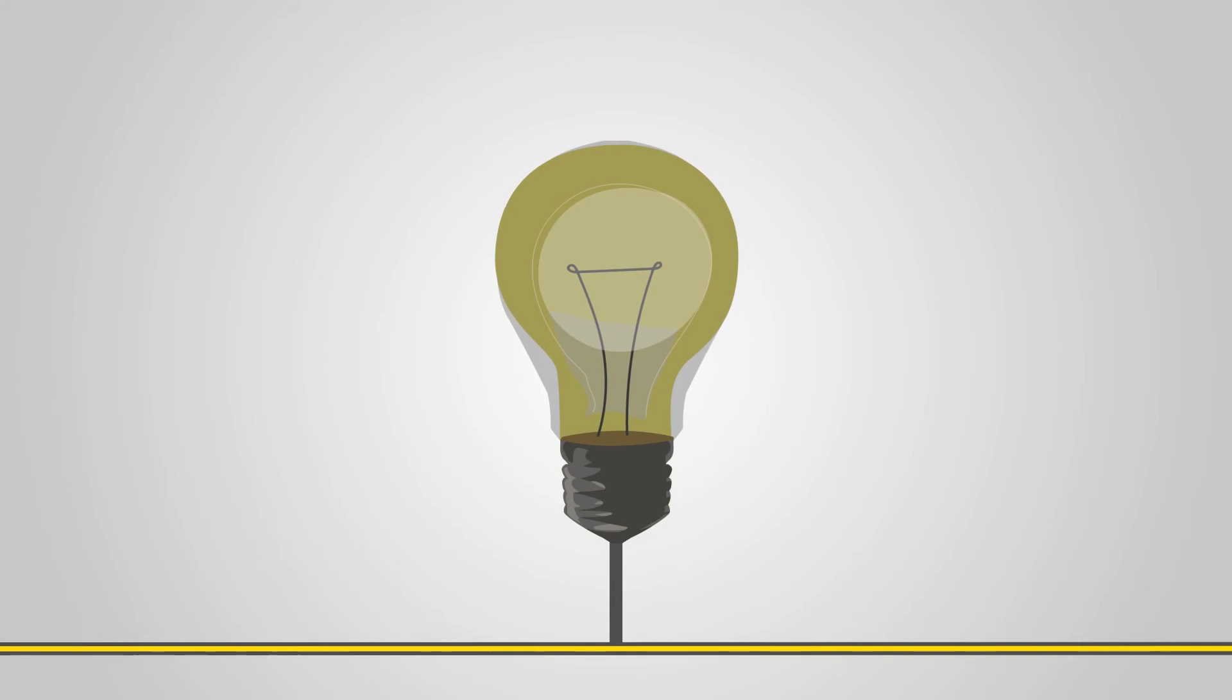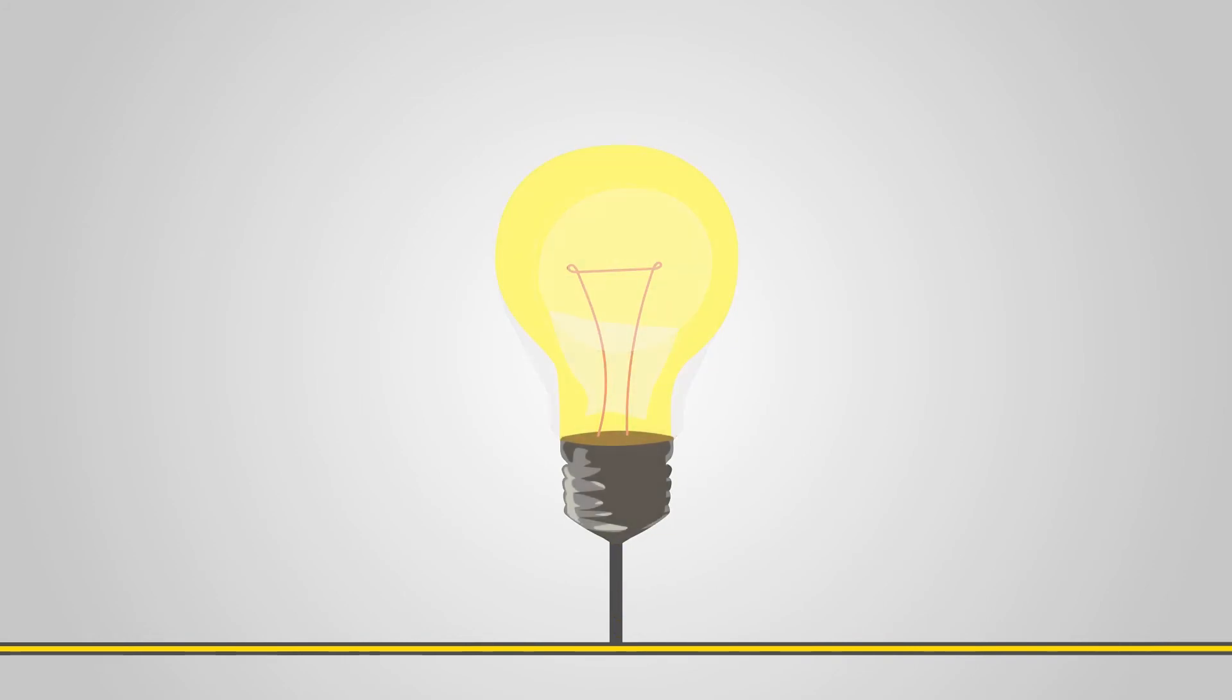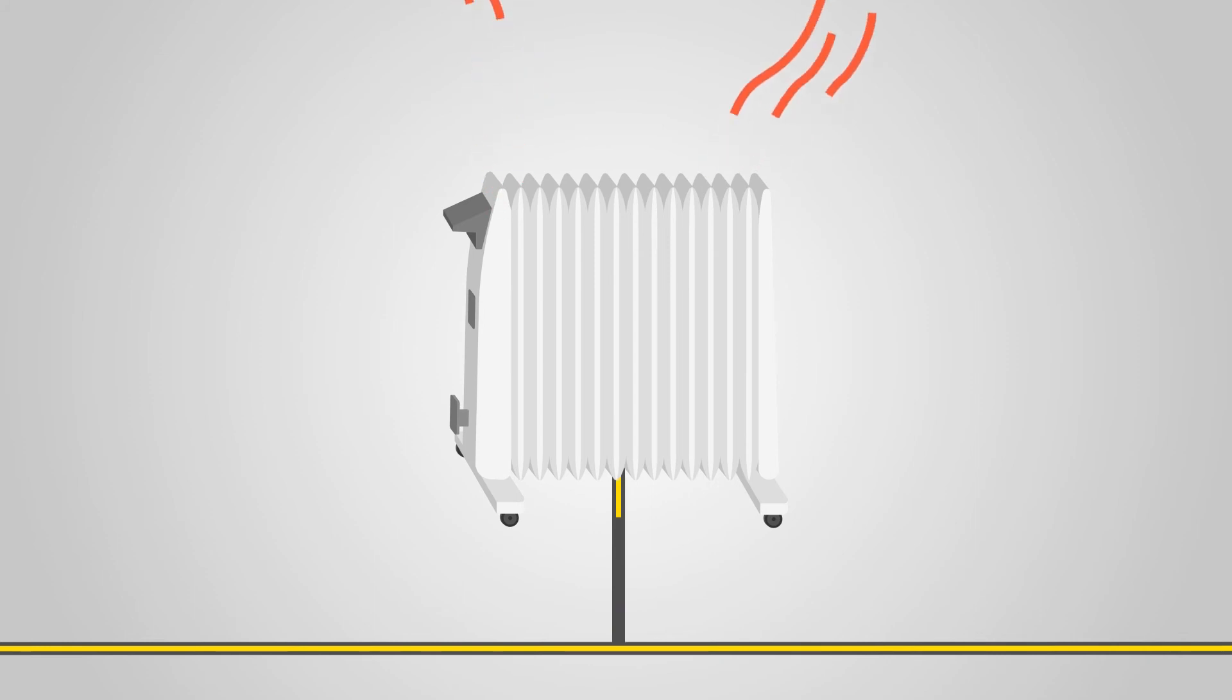Light bulbs glow because electrons streaming through the filaments make them red hot. Radiators use this effect to create warmth.